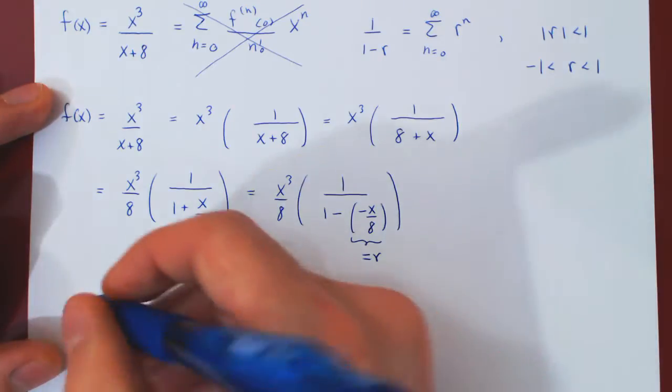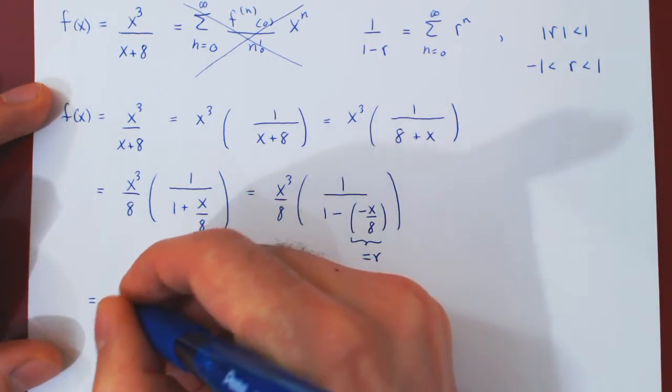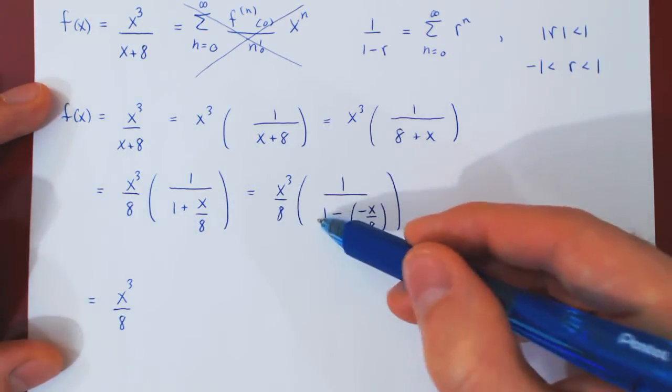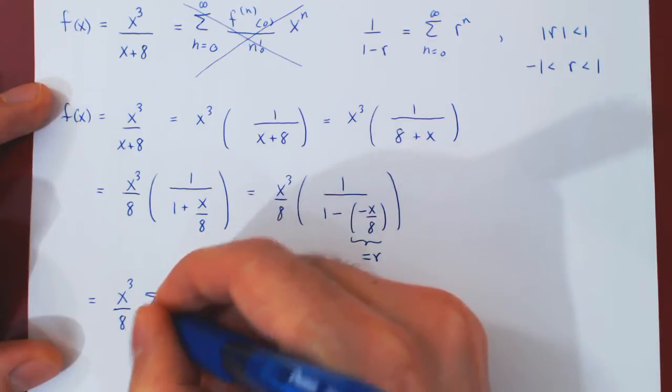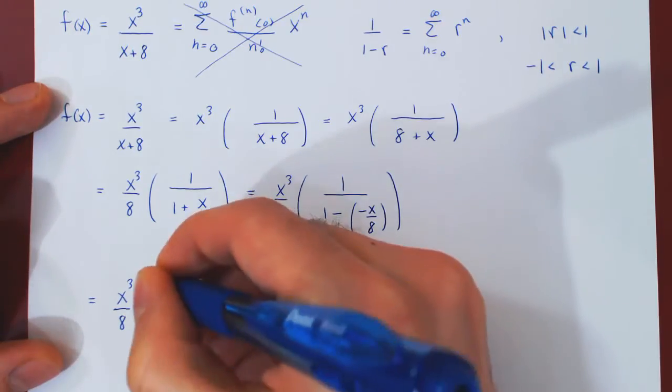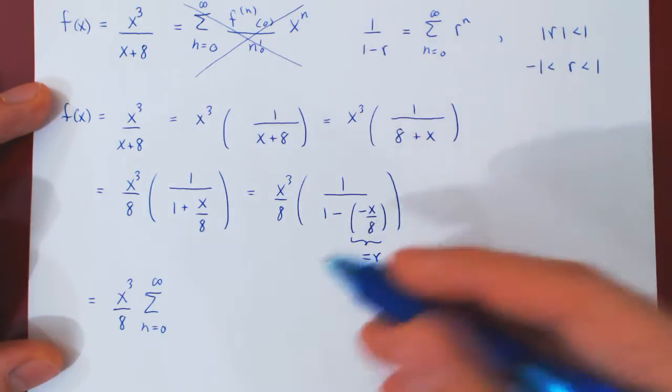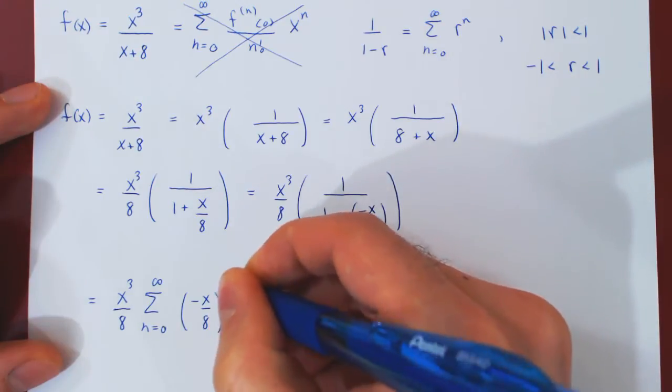We can view negative x over 8 as being the r from the geometric series formula, so 1 over 1 minus r. And now we can turn this simple rational function into a power series. So this will give us x cubed over 8 will stay there. And 1 over 1 minus r is the series as n goes from 0 to infinity of simply r to the n. So all of negative x over 8 to the n.